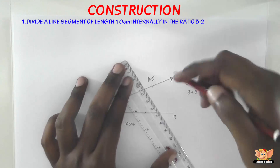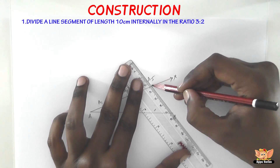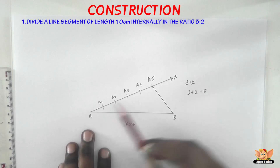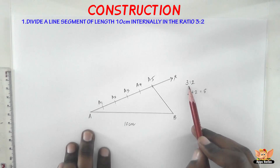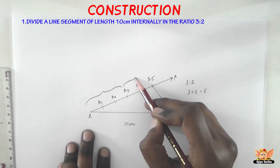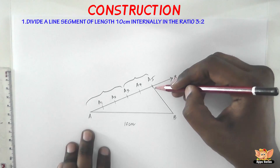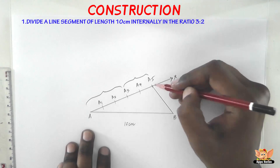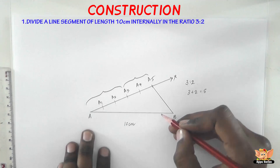The next step is to join A5 and B. Now this represents 5 parts. We need the ratio 3 is to 2, so it splits as 3 and 2. We need to draw a line at A3 such that it is exactly parallel to BA5. If we draw this line exactly parallel to BA5, we will get the point which divides line segment AB in the ratio 3 is to 2.